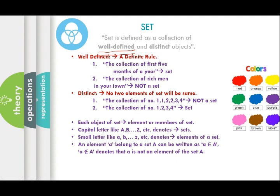Each object of a set is called an element or member of a set. Capital letters like A to Z are used to denote sets, while small letters like a to z are used to denote elements of a set. The 'belongs to' symbol has special importance in set theory. An element a belonging to set A is written as a ∈ A, read as 'member of' or 'belongs to' — this is also called membership notation. If an element is not present in the set, it is written as a ∉ A.